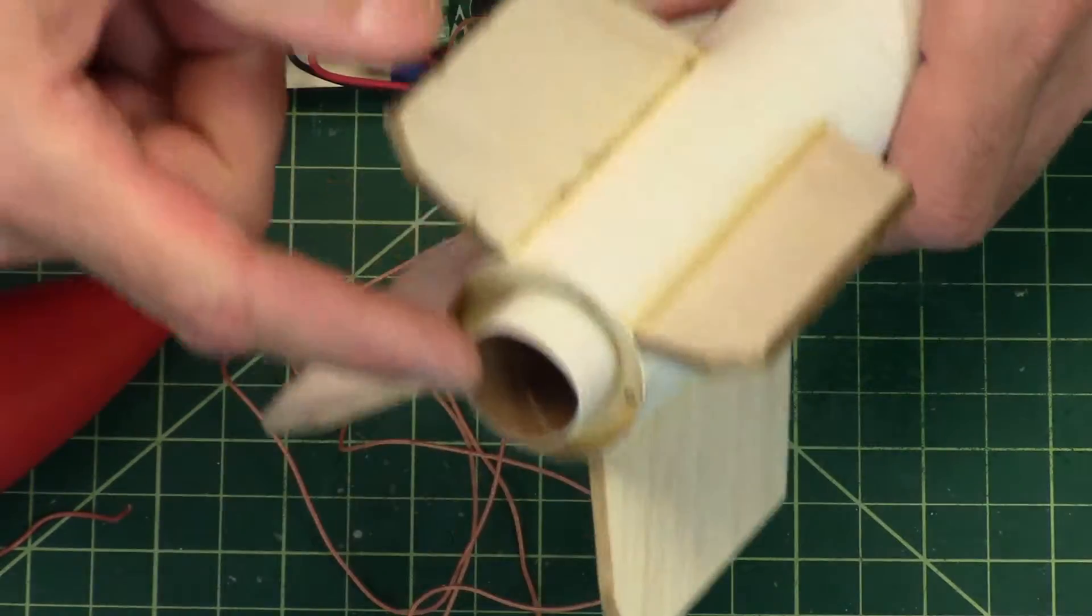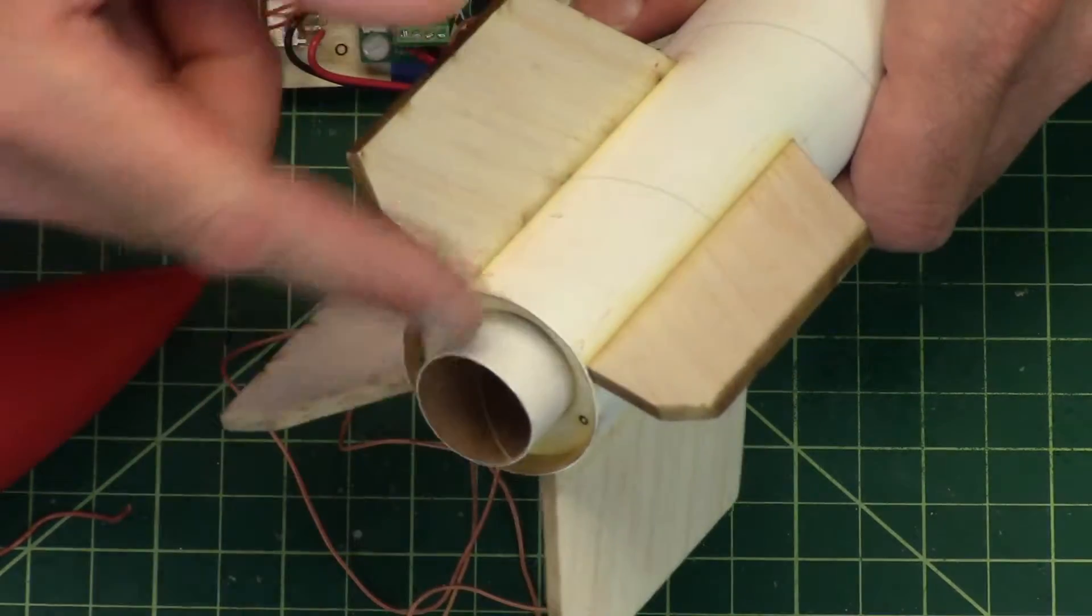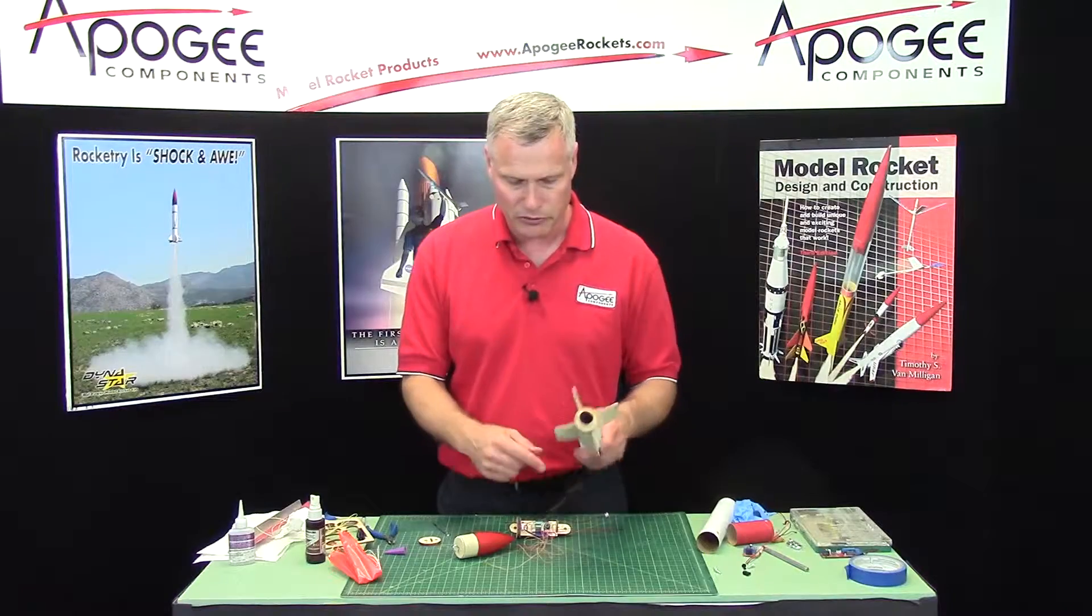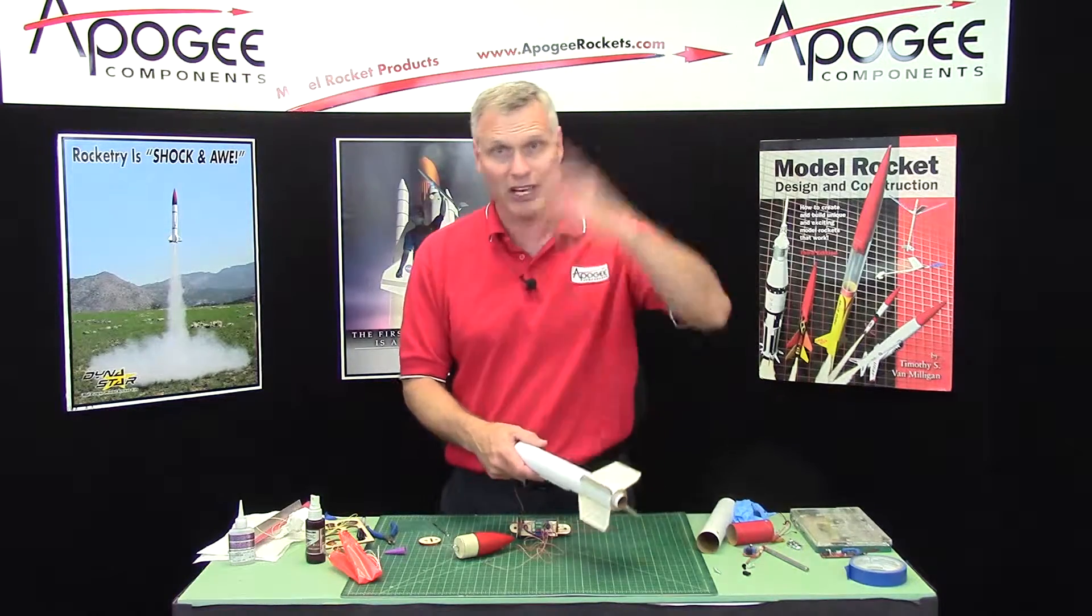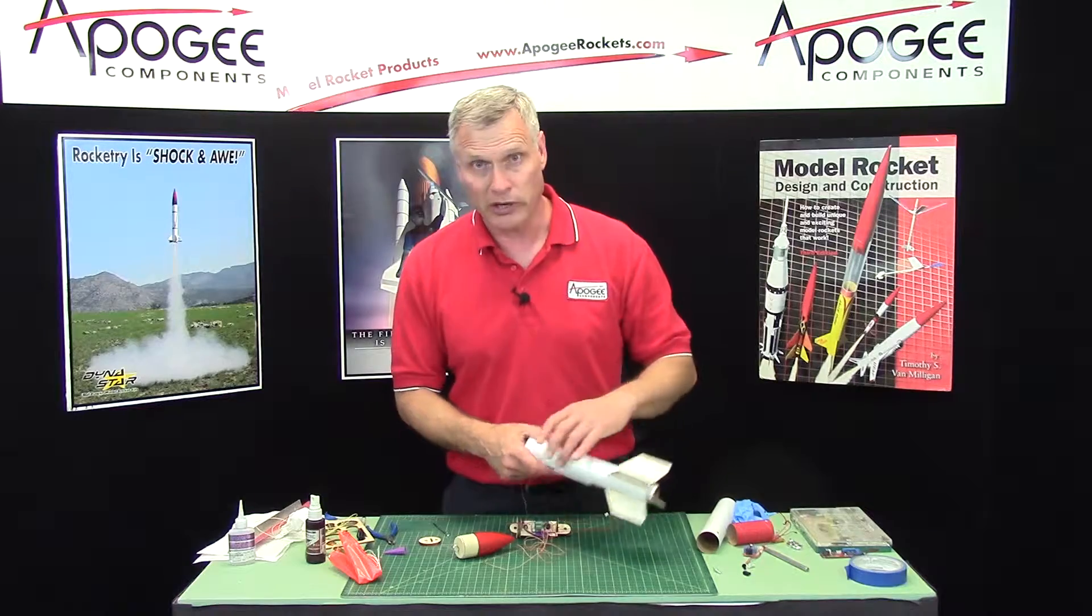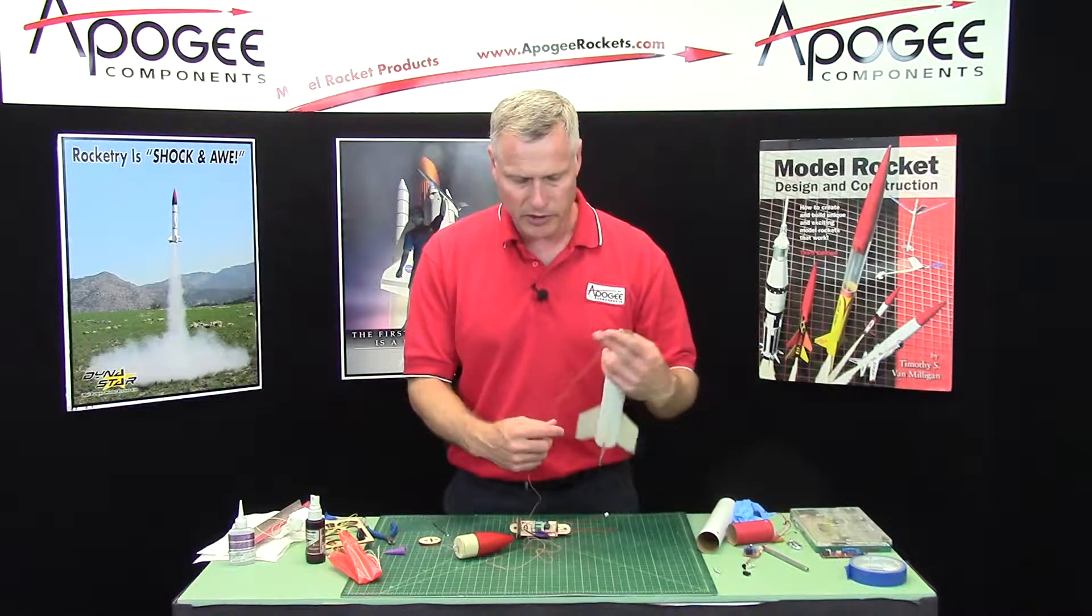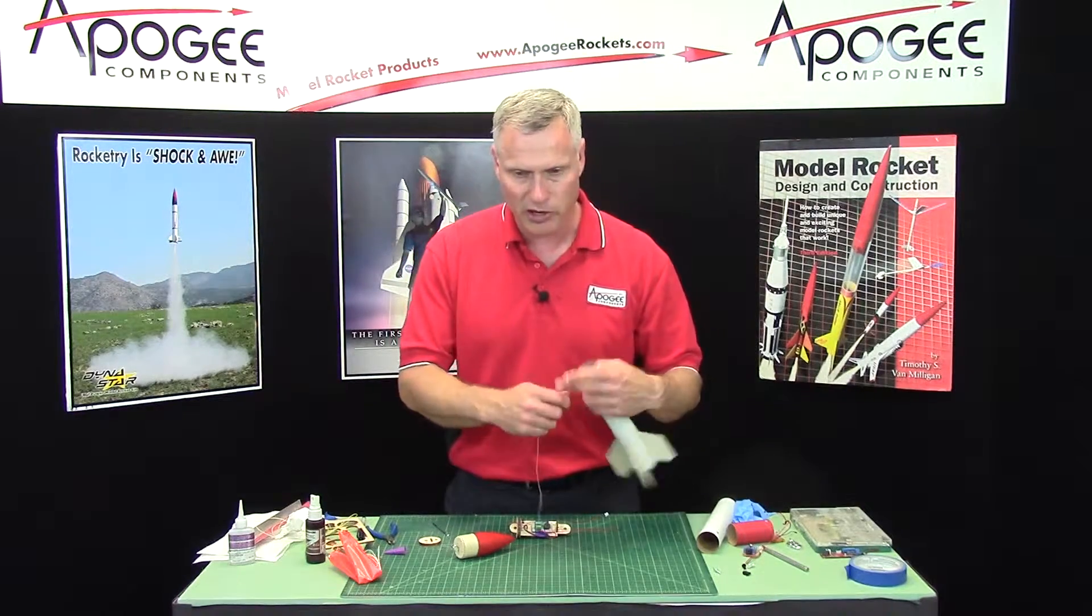This particular rocket has a 24mm engine mount tube and I highly recommend this for using altimeters because you want to get your rocket high enough to where the main parachute has enough time to deploy before it hits the ground.